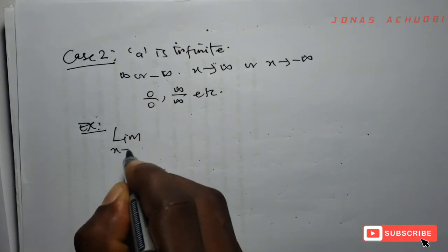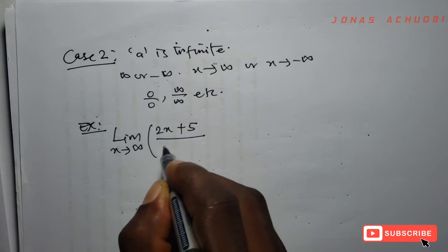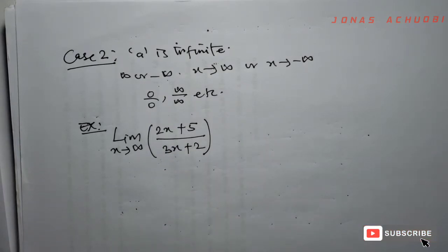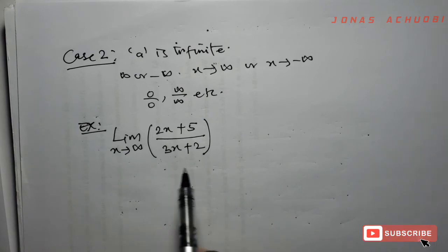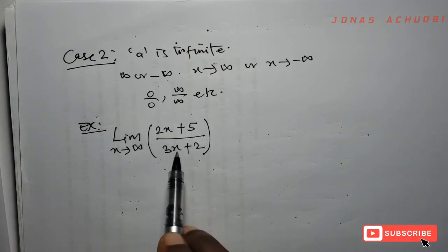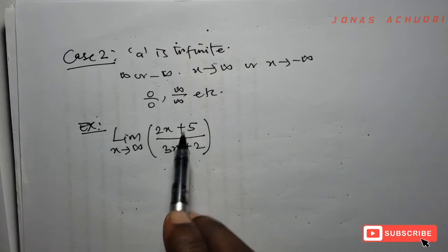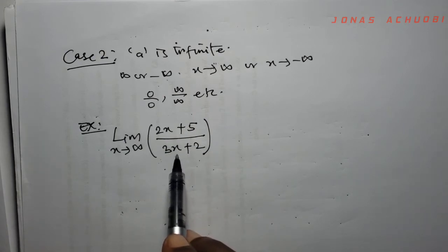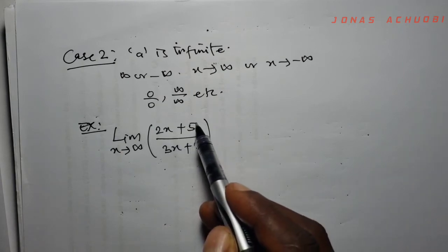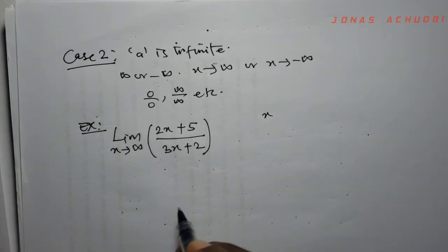Let's explain with an example. We want to evaluate the limit as x tends to infinity of (2x + 5) / (3x + 2). Direct substitution does not work here. Instead, we look for the highest power of x present in the function. Both numerator and denominator have x to the power of 1, so the highest power of x is 1.